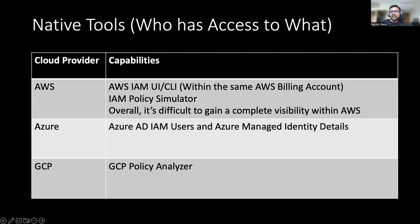How can you determine who has access to what? On the AWS side, you can leverage AWS IAM — you can leverage the UI or the CLI to gain some visibility. You can also leverage the IAM Policy Simulator to get some idea around resource-based policies and whether anything is denied from an organization policy, which is SCP. If you really want to get complete visibility within AWS, it is quite hard to get, and that's where you need to leverage upon some external CIEM-based solutions, including CyberArk.